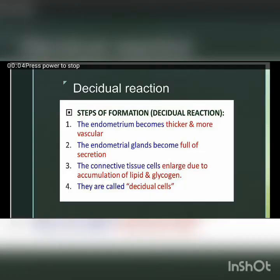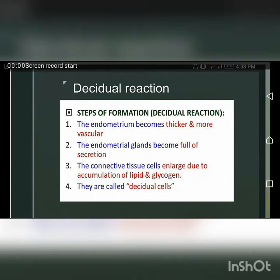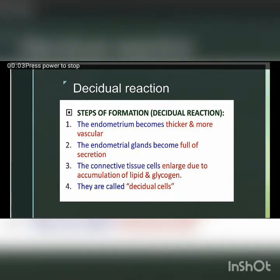Decidual reaction also occurs in the second week. Decidua is basically the endometrium of the pregnant uterus. Decidual reactions occur when the endometrium becomes thicker and more vascular, endometrial glands become full of secretions, and connective tissue cells enlarge due to accumulation of lipid and glycogen.